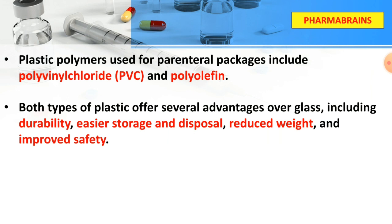We use plastic containers which are filled with the preparation. The plastic polymers used for packaging are Polyvinyl Chloride (PVC) and Polyolefin. Both types of plastic offer several advantages over glass, including durability, easier storage and disposal, reduced weight, and improved safety.